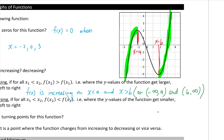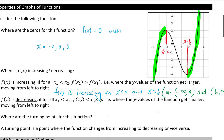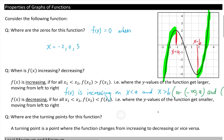Recall we can express this in interval notation or set notation. f(x) is decreasing if for all x₁ less than x₂, f(x₂) is less than f(x₁). All this means is where the y values of the function get smaller moving left to right. We see that in between a and b, the function is decreasing.